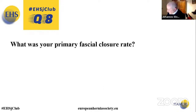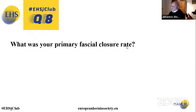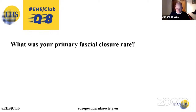Regarding primary fascial closure rate: if you accept that closing the posterior fascia counts as primary fascial closure, we achieve up to 100%. If you require the anterior fascia to also be closed, it's about 95%. Either way there's no big difference.